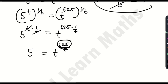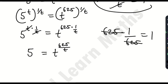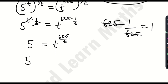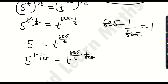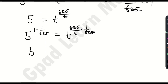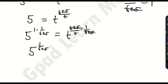To get rid of the 625, I'll multiply the exponent again by the multiplicative inverse of 625. If you multiply 625 by 1/625, they cancel and you get 1. So I raise both sides' exponents by 1/625: the left becomes 5 raised to the power 1·(1/625), which is 5^(1/625), and the right becomes t raised to the power (625/t)·(1/625), which simplifies to t^(1/t).